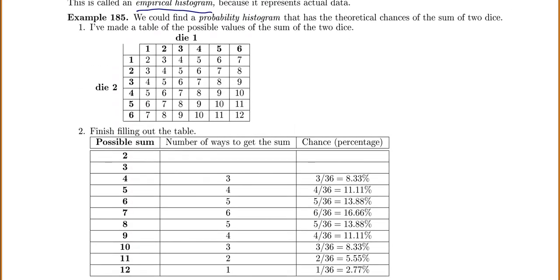In example 185, we can find a probability histogram showing the theoretical chances of the sum of two dice. I made a table of the possible values of the sum. On the first die you can get 1–6, on the second die 1–6, and the sums in the middle of the table vary from 2 to 12. If I want to find the chance of getting a 2, there's only one way to get a 2 out of a total of 36. So it's 1/36, which equals 0.0277, or 2.77%.